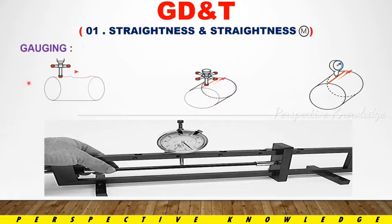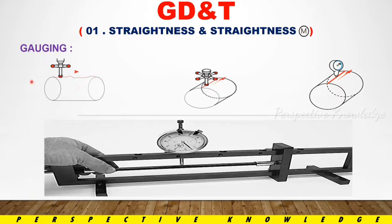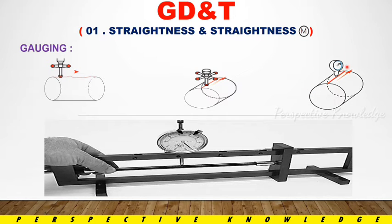For gauging, we use a CMM to measure. We place the part on a surface — low, low, low — the same level, just touching. Then we create a line based on that and take the limit. This way we can measure straightness. If we use a dial gauge, we can calculate the straightness value directly against the specification.